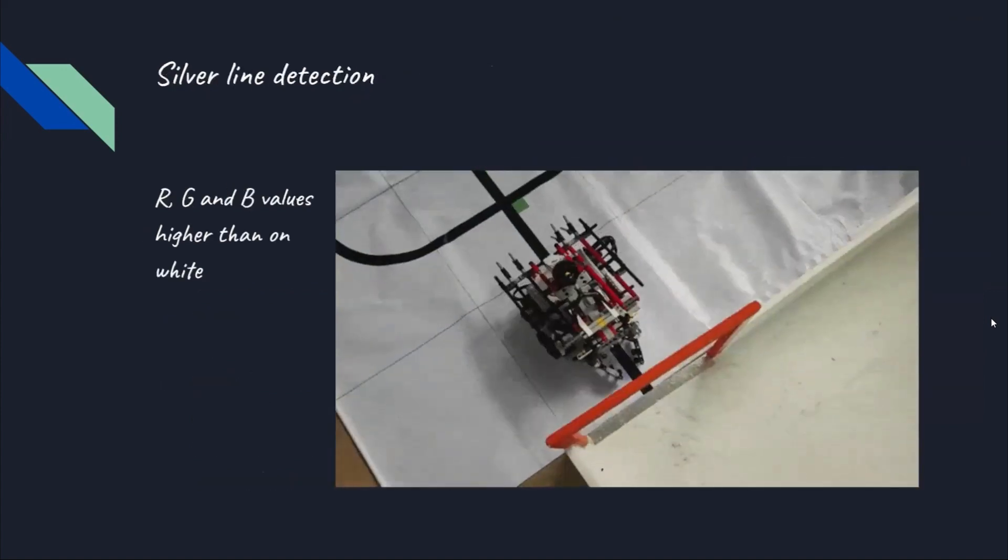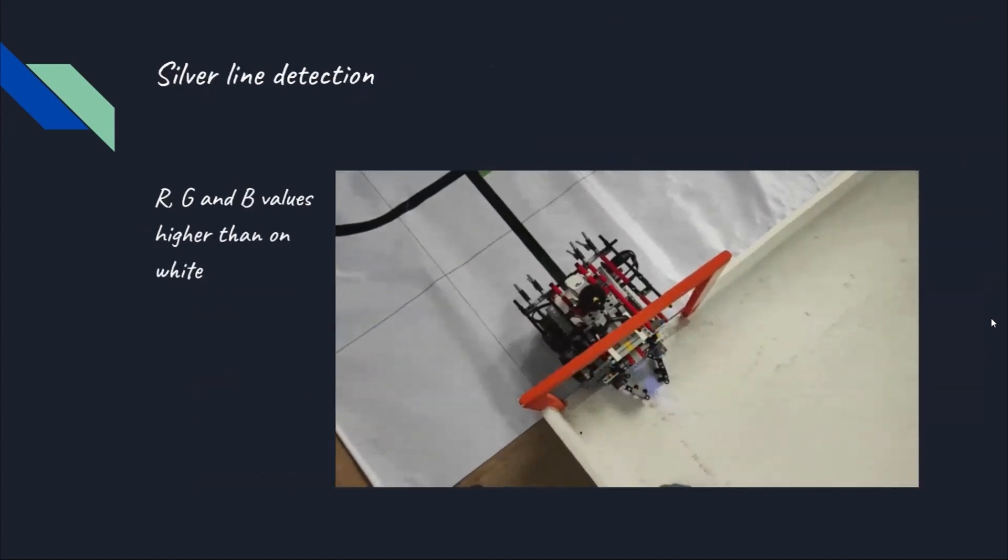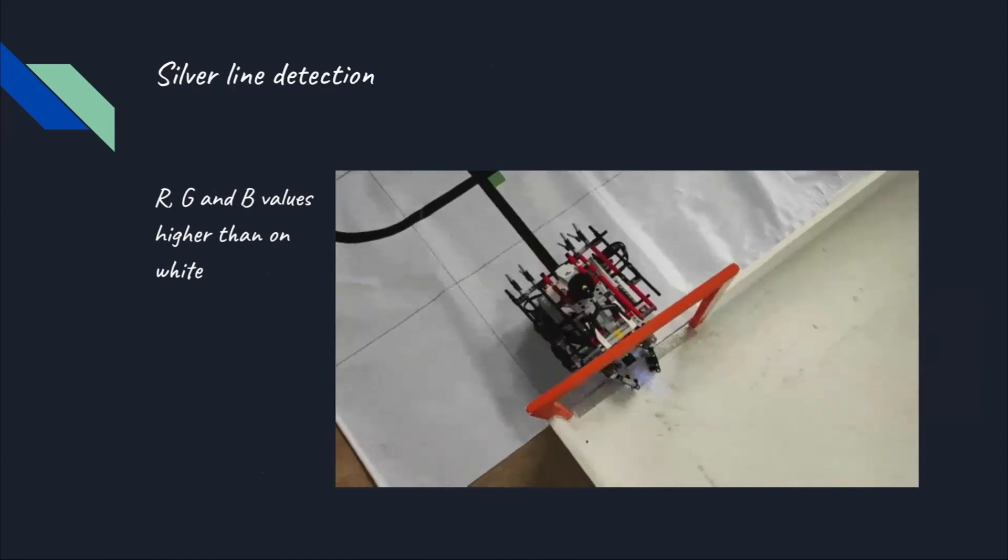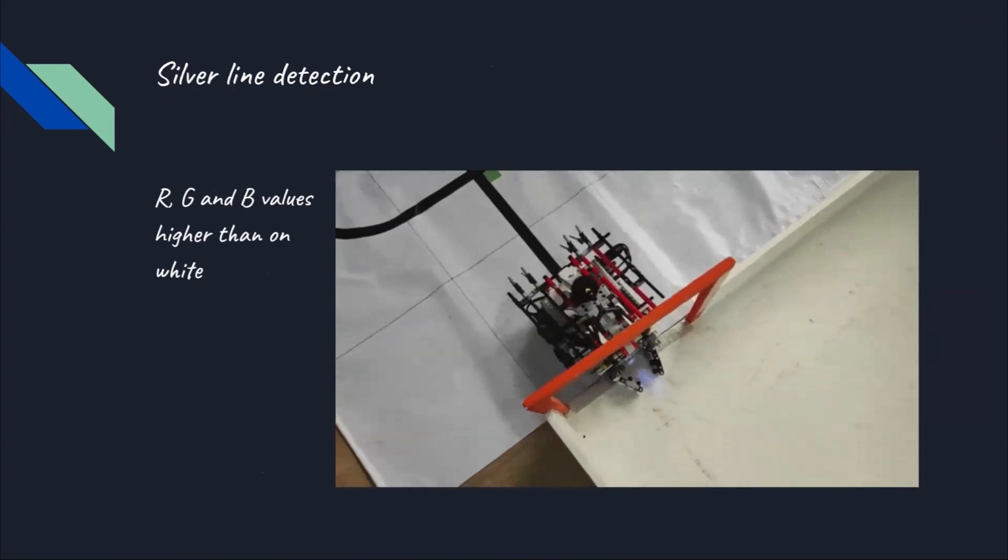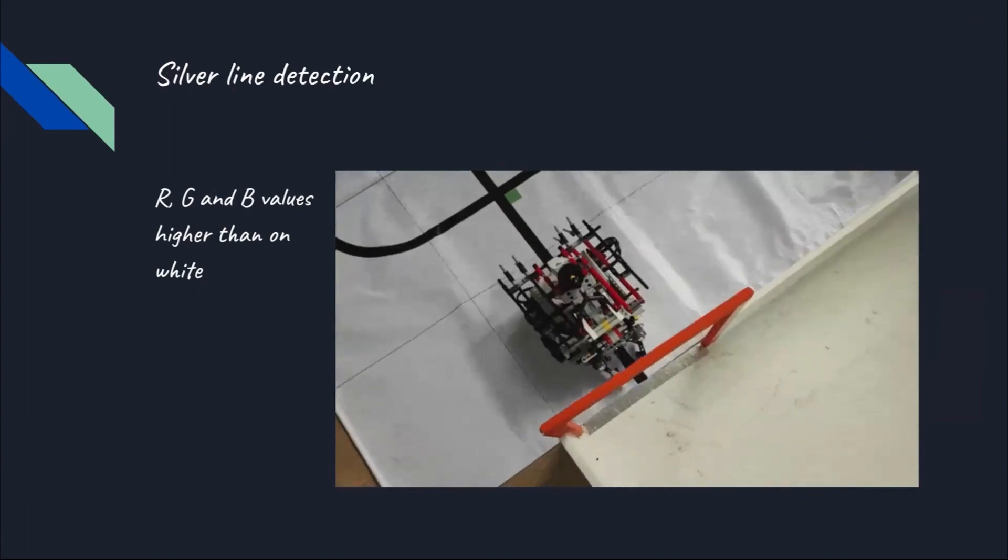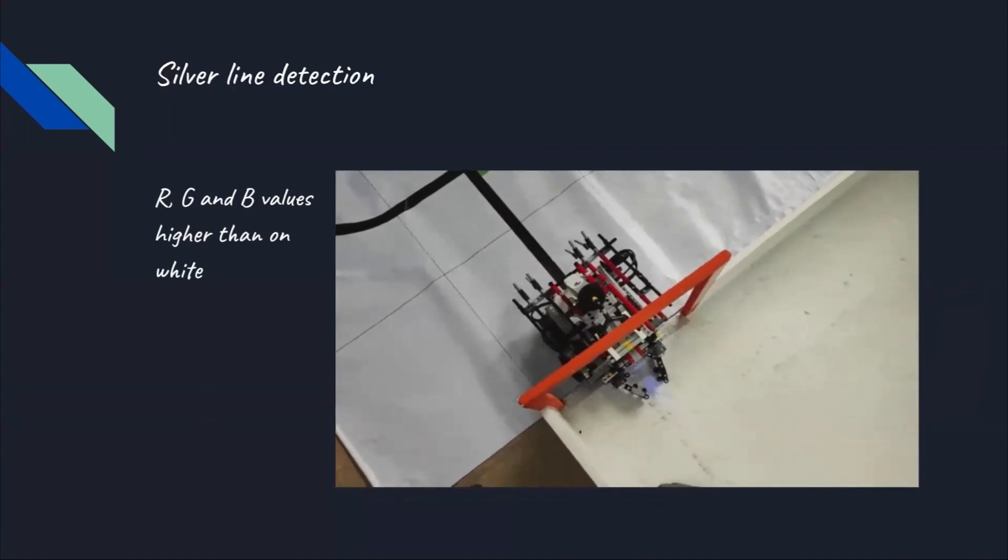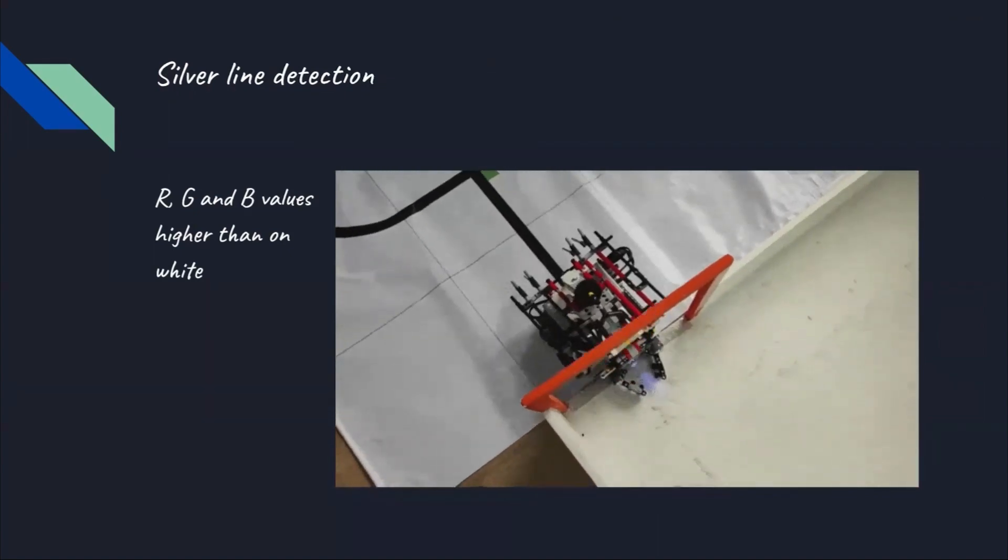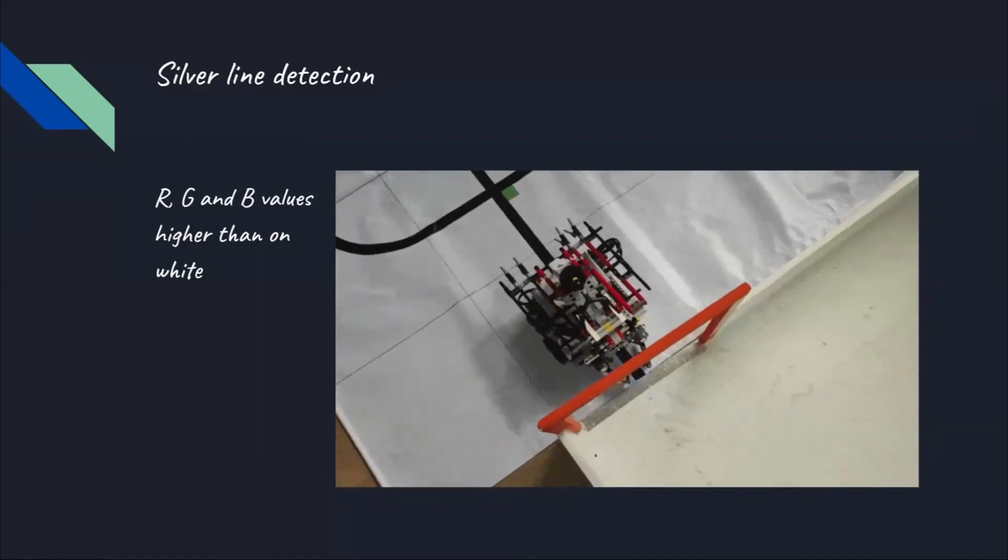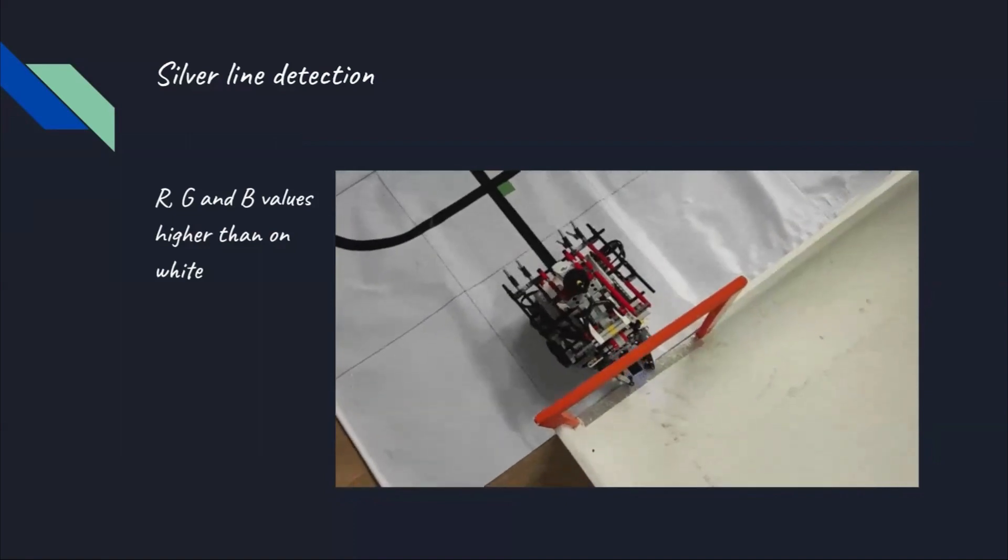We need to detect the silver strip to start the evacuation zone code. Since the silver strip is more reflective, we can detect it by checking the red, green and blue values that the robot is seeing is higher than the values for white. The white values are already stored in the array which we are using for calibration function.